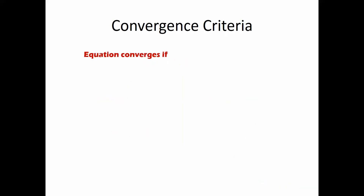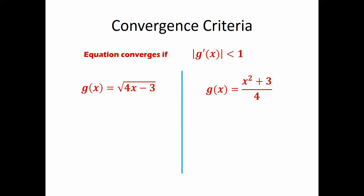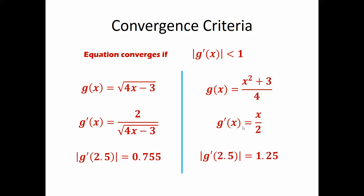The convergence criteria is simple: compute the derivative of g(x) and substitute the initial value. This is dependent on the initial value, so it can converge for one starting value and diverge for another. If the absolute value of the derivative at the assumed value is less than 1, it is going to converge. Using the same example, the two forms give different derivatives, and at an initial value of 2.5, one is less than 1 and the other is greater than 1.